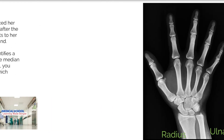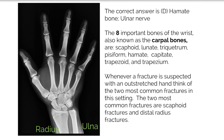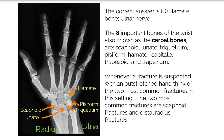The correct answer is D, hamate bone fracture and ulnar nerve. The eight important bones of the wrist, also known as the carpal bones, are scaphoid, lunate, triquetrum, pisiform, hamate, capitate, trapezoid, and trapezium.